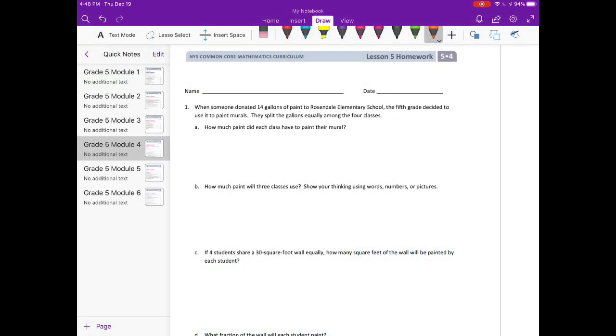Module 4, Lesson 5 homework. Number one: When someone donated 14 gallons of paint to Rosendale Elementary School, the fifth grade decided to use it to paint murals. They split the gallons equally among the four classes. How much paint did each class have to paint their mural? So they donated 14 gallons and they split the gallons equally among four classes.